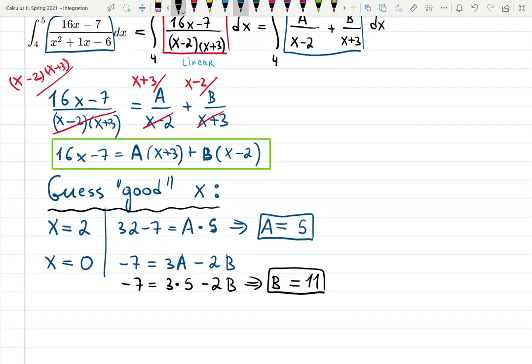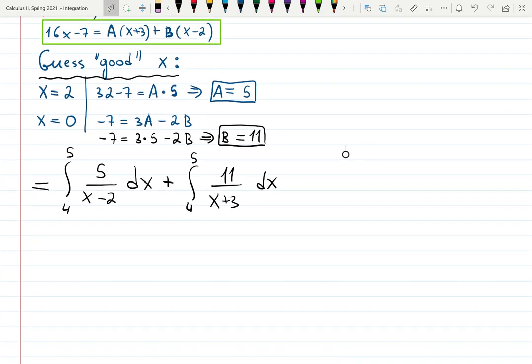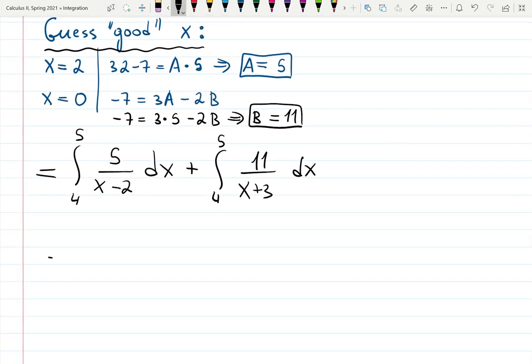And I will now complete the integral. The integral becomes integral from 4 to 5, A is 5 over x minus 2 dx, and I'll break it into two integrals plus integral from 4 to 5, 11 over x plus 3 dx. That's what I'm having here now.